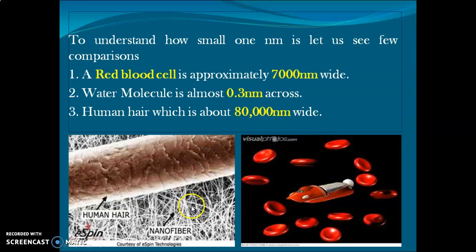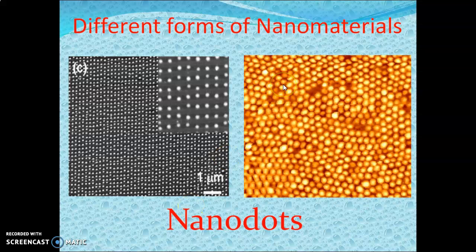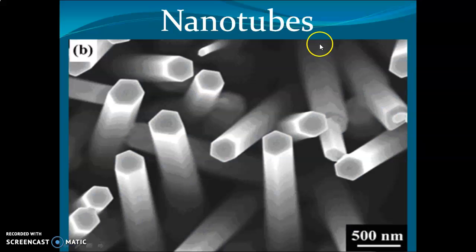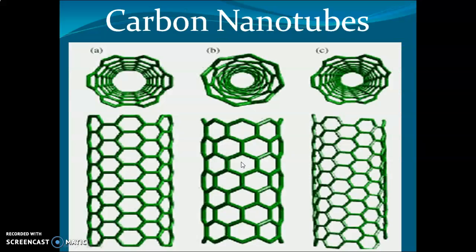There are different forms of nanomaterials. The best-known example is graphene. The different forms of nanomaterials include nano dots, nanowires, nanotubes, and carbon nanotubes (CNTs). These represent three different structural forms of carbon nanotube clusters.